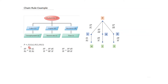P is expressed as a function of labor, capital, and resources, where labor depends on unemployment rate, capital on interest rate, and resources on time. The links from P to L, K, and R are partial derivatives because there is a bifurcation. The links L→U, K→I, and R→T are direct derivatives since there is no splitting — just a direct connection.